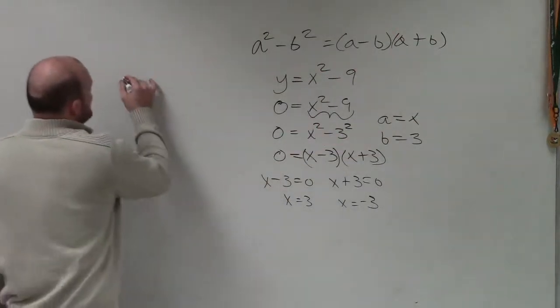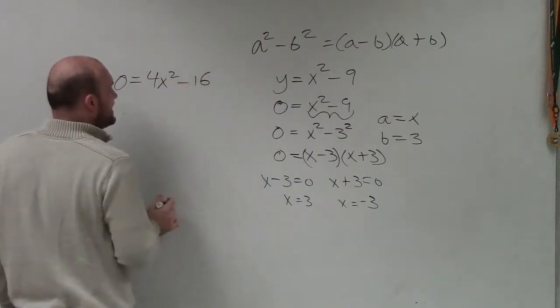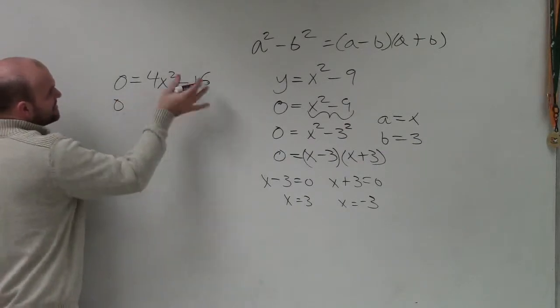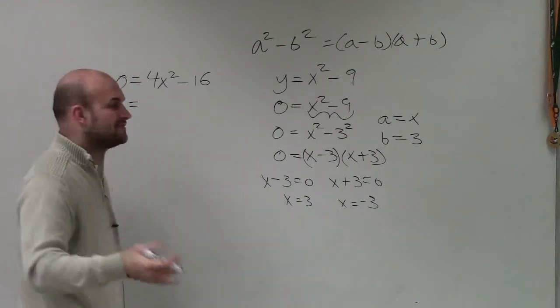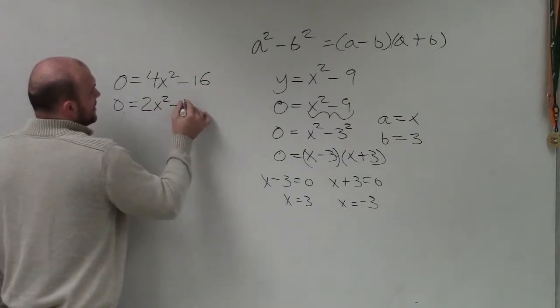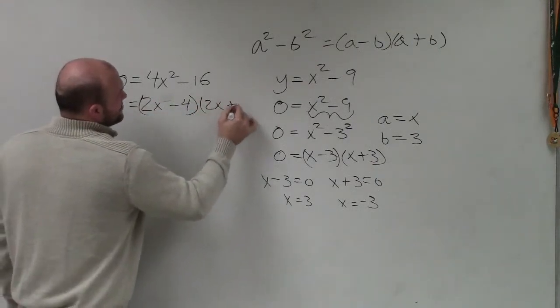So when you're getting into a problem, let's just say this one, 4x squared minus 16. Well, when I go ahead and factor this, alright, so I apply the difference of two squares. Well, I'll go through a lot of different examples for this. But when I go through the difference of two squares, I can rewrite this as 2x minus 4 and then 2x plus 4.